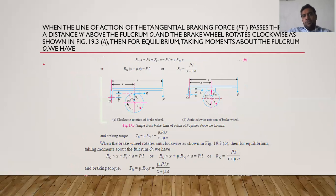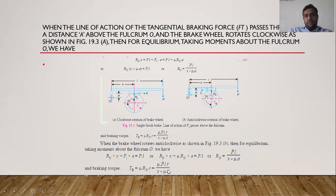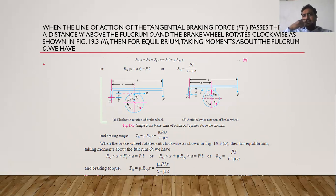Case 3: When Ft acts above the fulcrum O, at a distance 'a' above O. Taking moments about O: for clockwise drum rotation, Rn = PL/(x – μa), and braking torque Tb = μPLR/(x – μa). For anticlockwise rotation, Rn = PL/(x + μa), giving Tb = μPLR/(x + μa). So in case 3, clockwise gives (x – μa) and anticlockwise gives (x + μa).